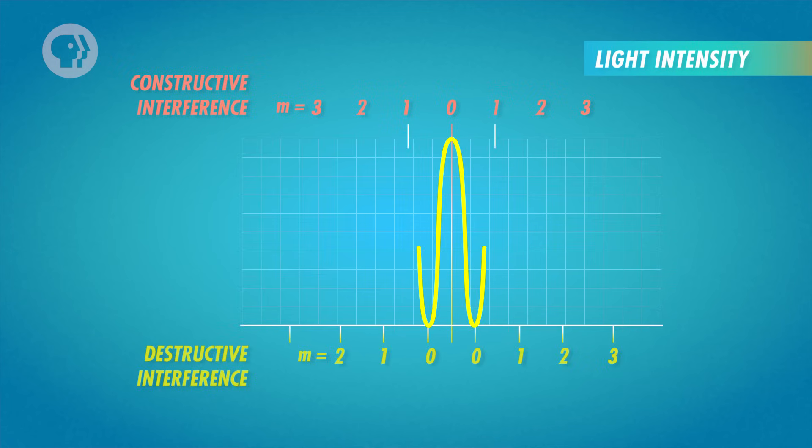When light passes through two slits, like in the double slit experiment, the line in the center will be the most intense. And the further the lines get from the center, the less intense, and therefore the less bright they'll be.